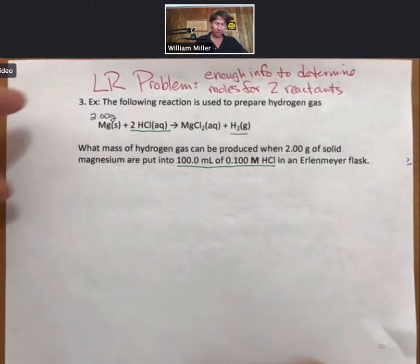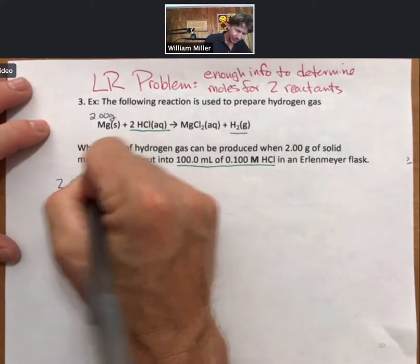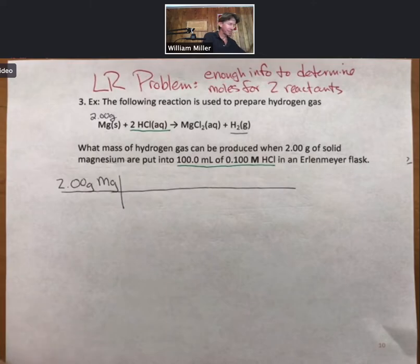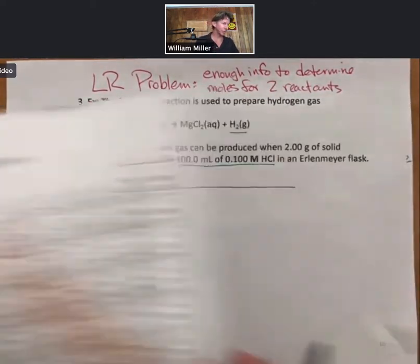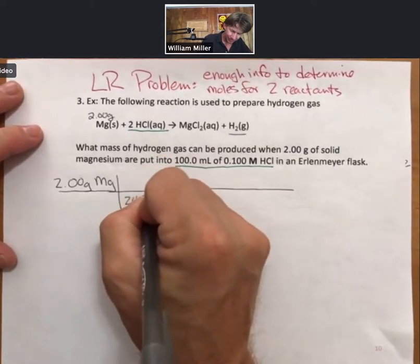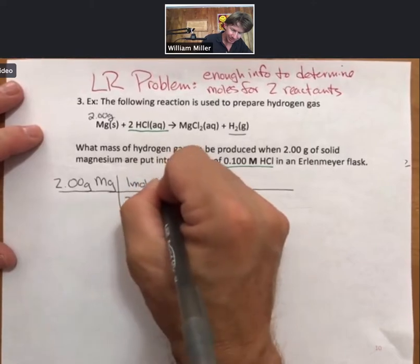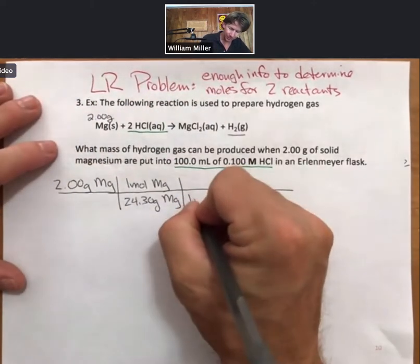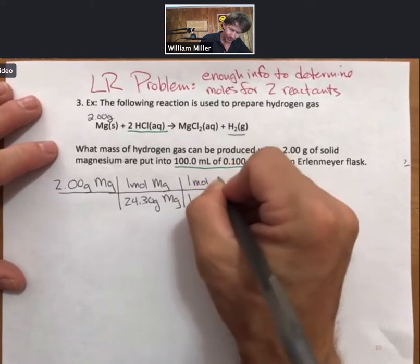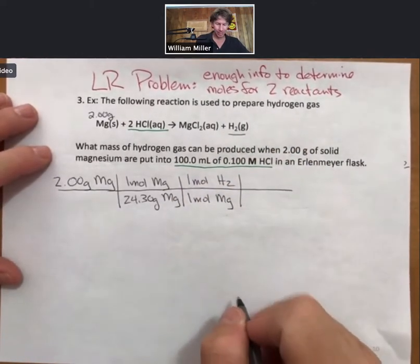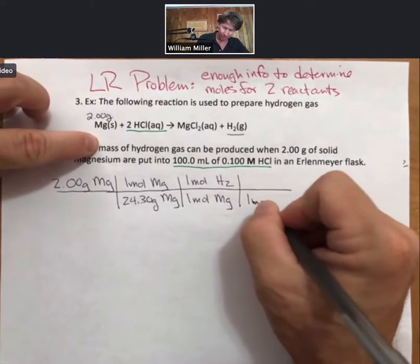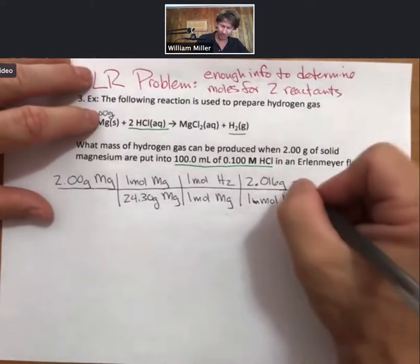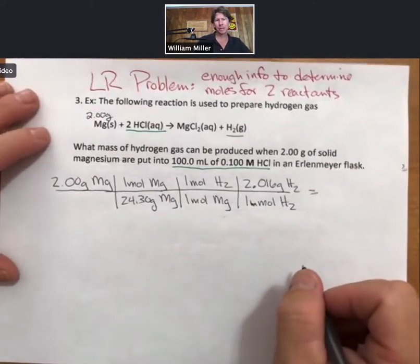We'll turn our grams of magnesium into moles. Somewhere around here there's a periodic table. There we go. Magnesium, 24.30 grams of magnesium for one mole of magnesium. Then for every one mole of magnesium reacted, we will produce one mole of hydrogen. And then we're asked for mass of hydrogen. And in one mole there are 2.016 grams of hydrogen. Let me set up the other one. Then we'll come back and do the calculations.